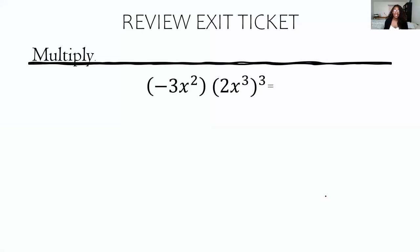We had negative 3x squared times 2x cubed, raised to the third power. Are we raising everything to the third power? No, we are not. The first parenthesis stays exactly the same, but everything inside the second parenthesis is being raised to the third power. So that means the 2 is being raised to the third power, and also that x cubed is being raised to the third power.